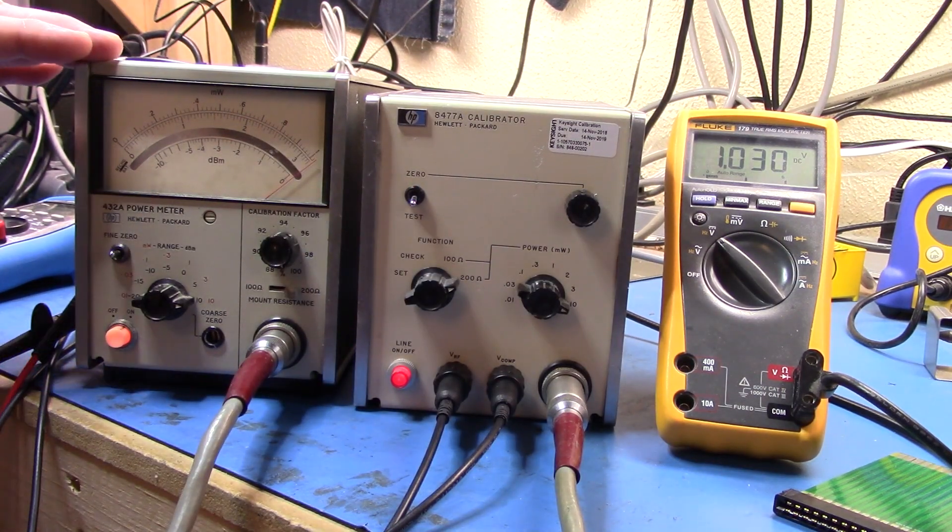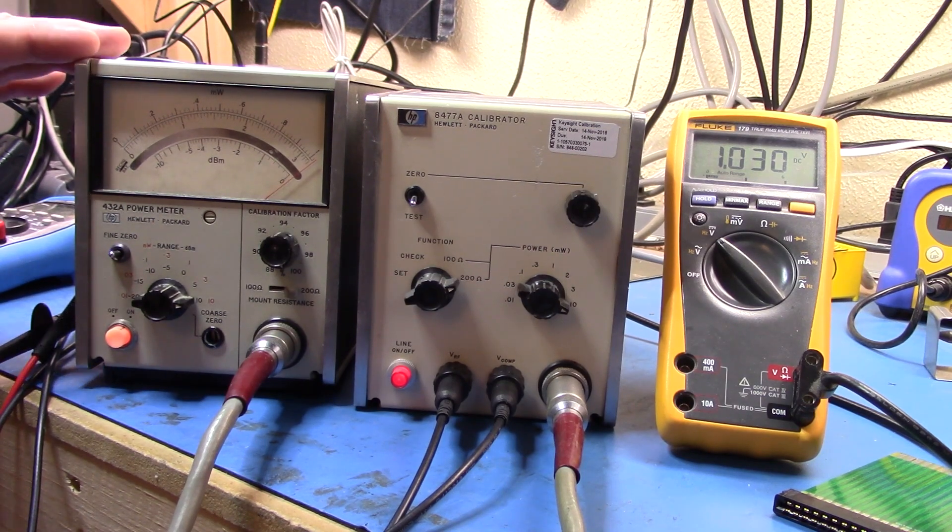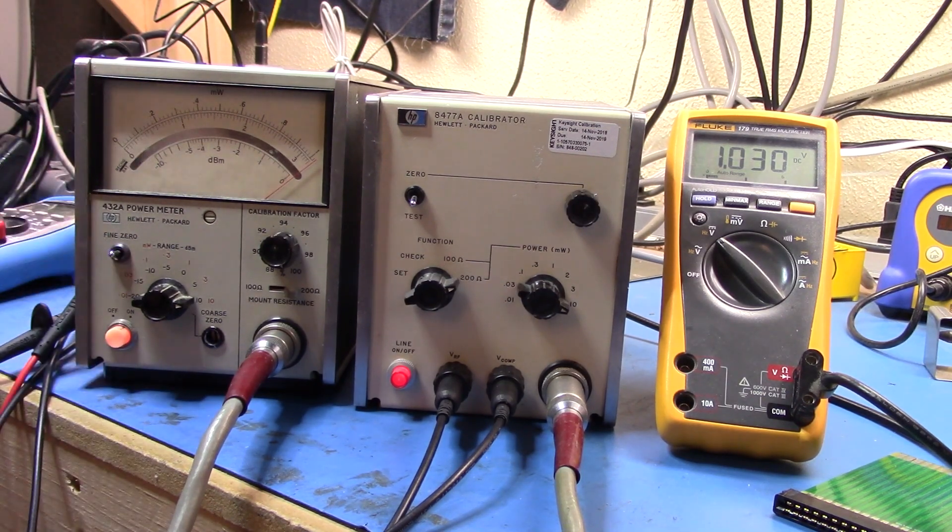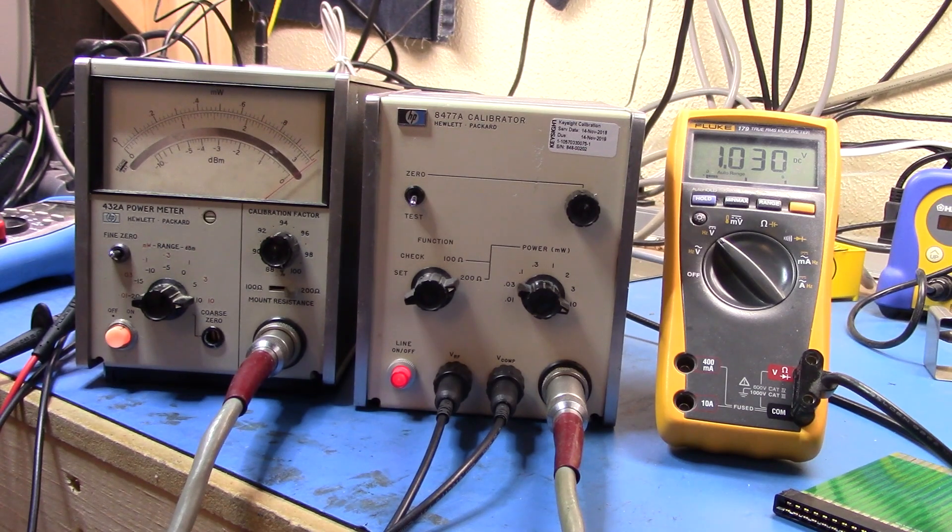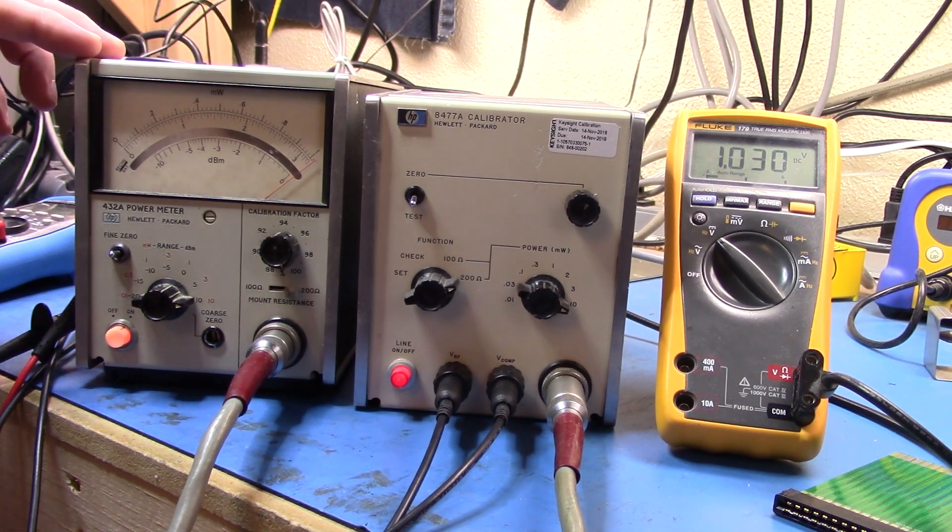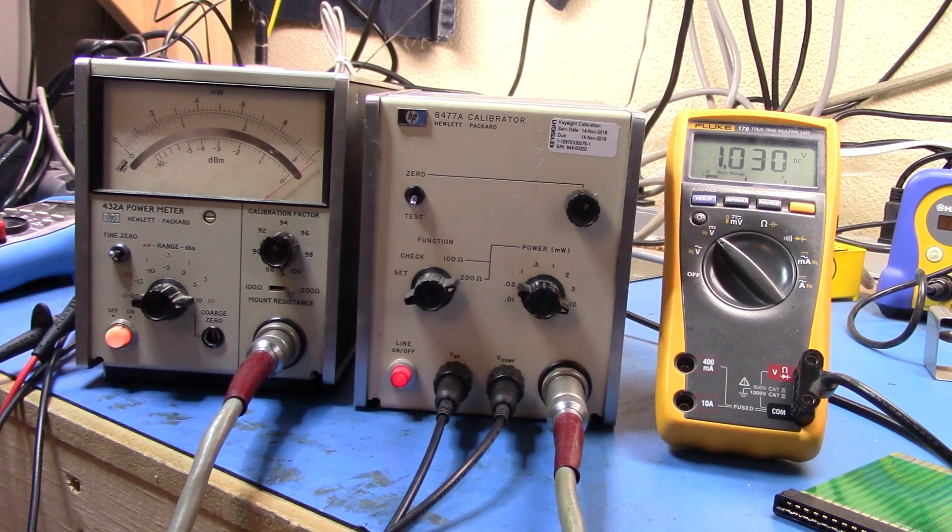So overall, I think short of actual calibration of the unit, what we're actually getting, what we've got here, with the replacement of that resistor, is a working 432A. If there is interest in doing it, let me know in the comments and I will put doing a calibration of this unit on the whiteboard and hopefully get to it sometime shortly in the future.